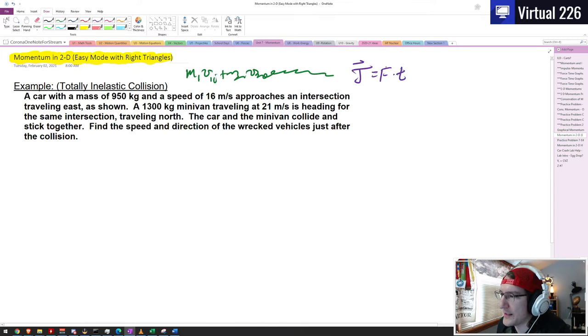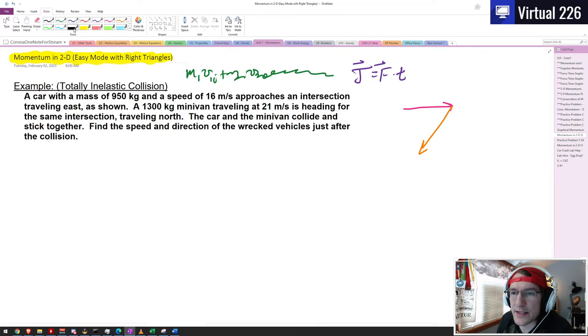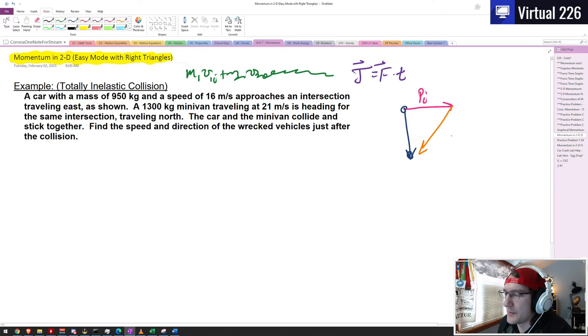We said that if we have something like a hockey puck moving this way and then we hit that hockey puck with the stick this way, the net result from start to finish would be the hockey puck going down. And we did this with an initial momentum plus an impulse equaled some final momentum.